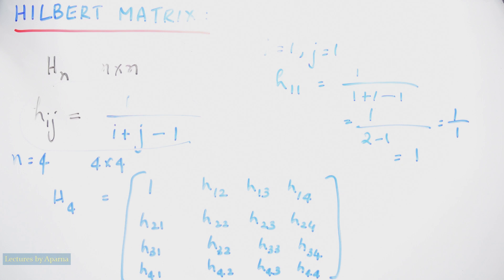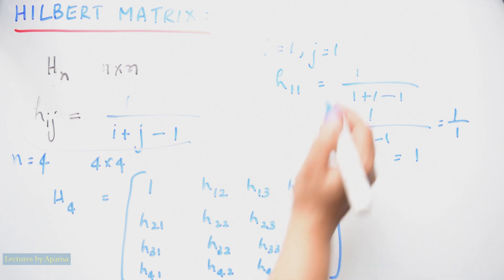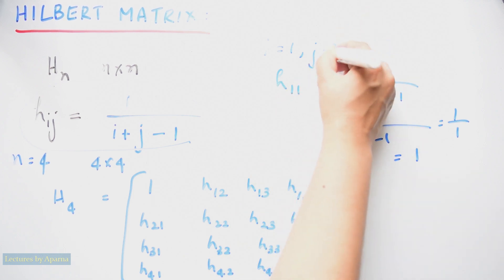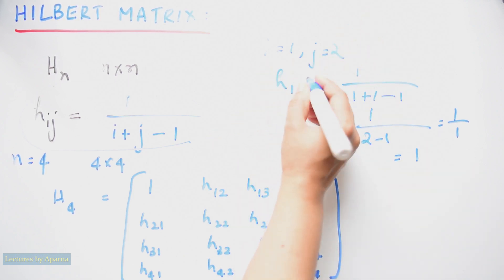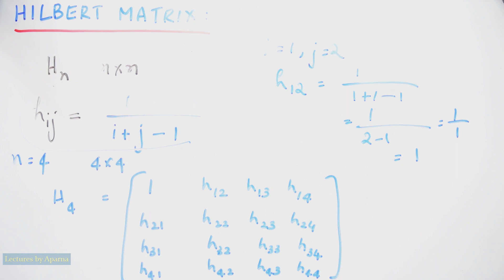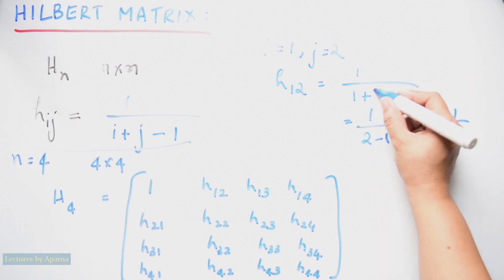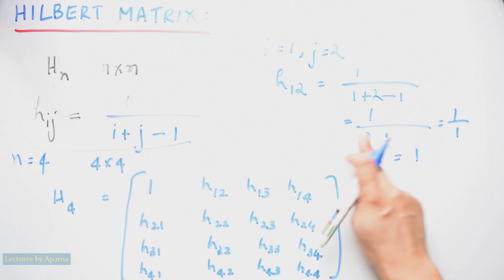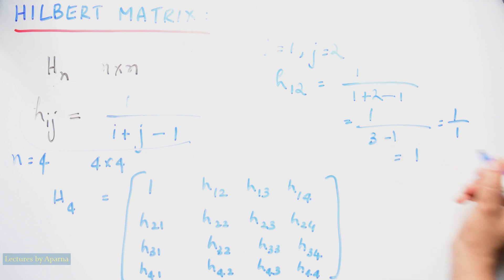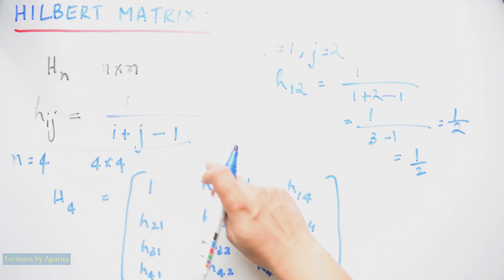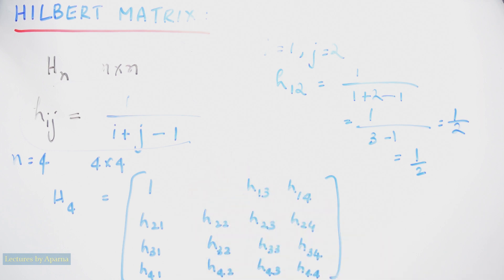Next, substitute i = 1, j = 2. Element H12 will be equal to 1 plus 2 minus 1, which will be equal to 3 minus 1 = 1 by 2. So substitute 1 by 2 in H12. Likewise, you have to find all the elements.